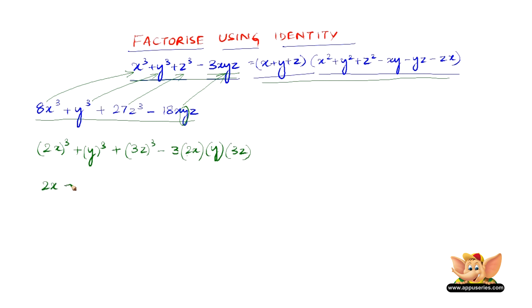That becomes (2x + y + 3z) into x² would be 4x² + y² + 9z² - 2xy (that is because x is 2x and y is just y) - 3yz (that is because y is just y and again z is 3z) - 6xz (that is because z is 3z and x is 2x).